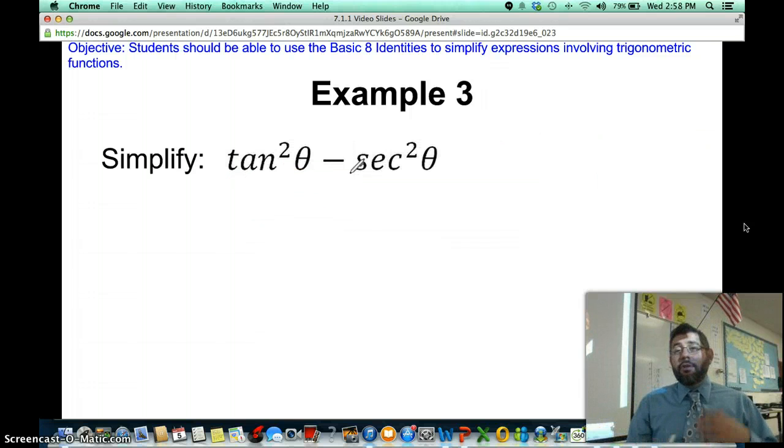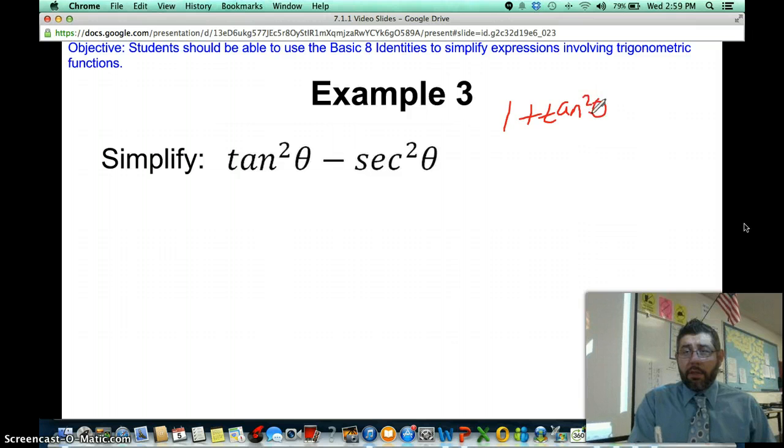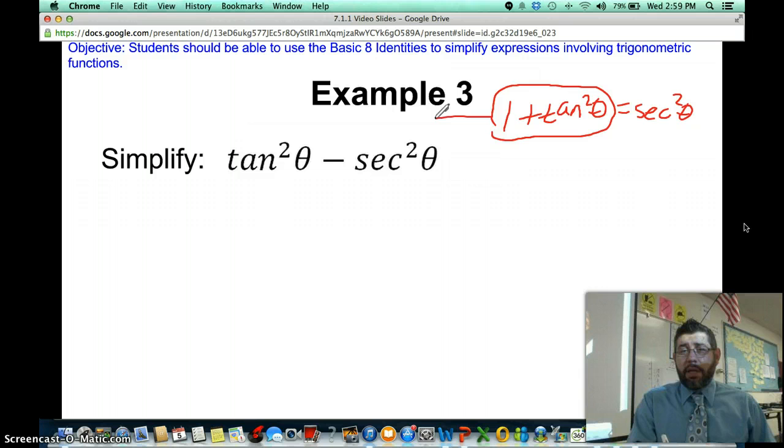I told you guys, these aren't that bad. You're using a little bit of algebra. But you've got to remember to use the identities, the eight identities I showed you. Let's take a look. Tangent squared theta minus secant squared theta. I know that one plus tangent squared equals secant squared. I got that from a Pythagorean identity.